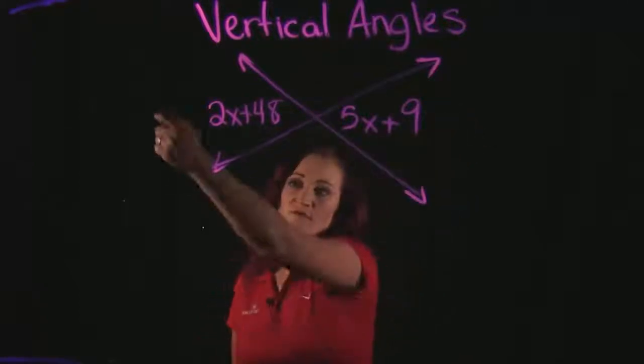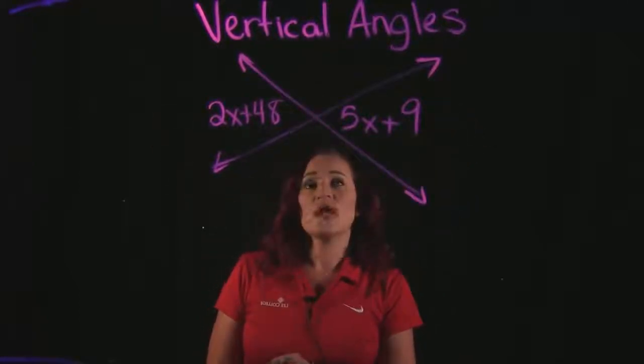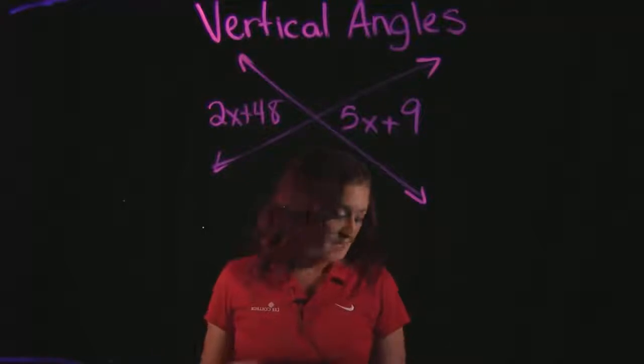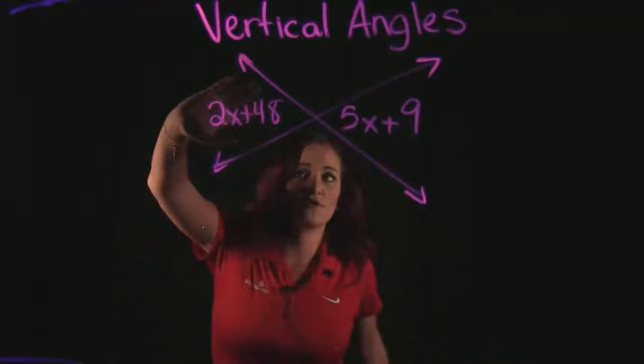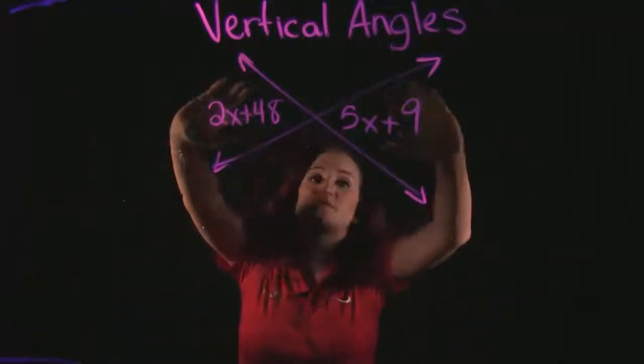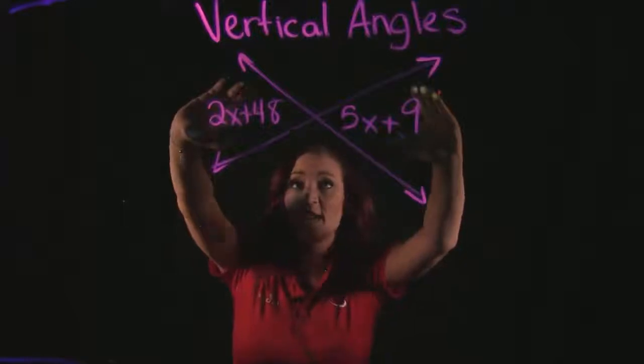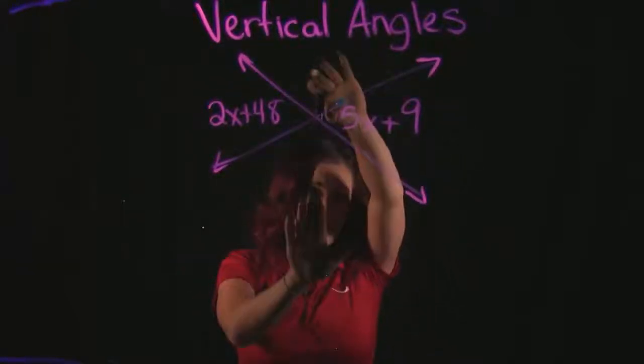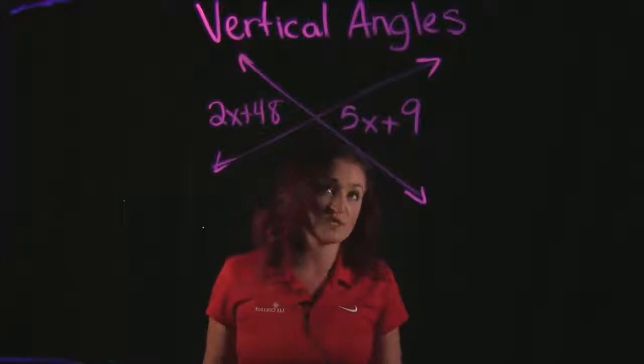1, 2, 3, 4. And vertical angles are the angles that are opposite each other. So for example here, the 2x plus 48 is a vertical angle with 5x plus 9. These two angles here across from each other up and down would also be vertical angles together.